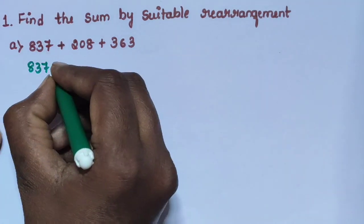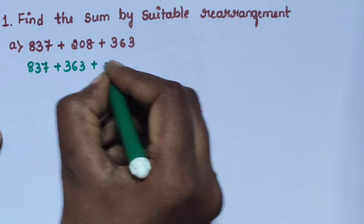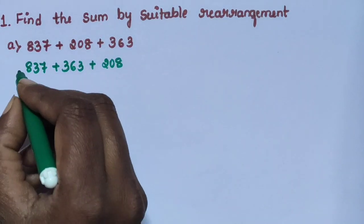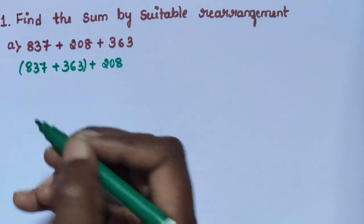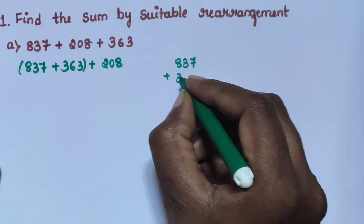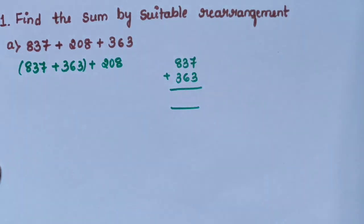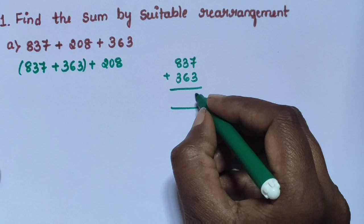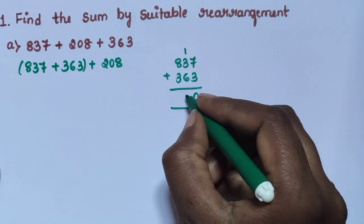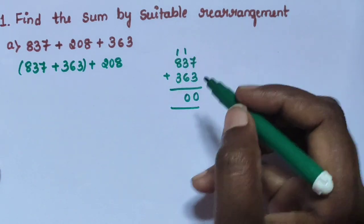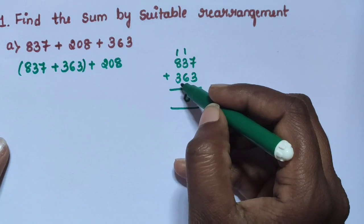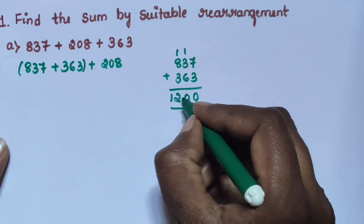Rearranged: 837 plus 363 plus 208. First, add these 2 numbers: 837 plus 363. 7 plus 3 is 10, write 0, carry 1. 1 plus 3 is 4, 4 plus 6 is 10, write 0, carry 1. 1 plus 8 is 9, 9 plus 3 is 12. Result is 1200.